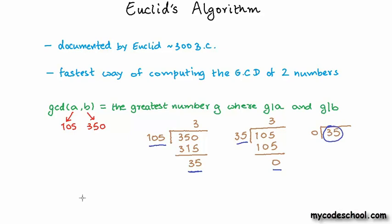Using Euclid's algorithm, we needed only two divisions to compute the GCD of 350 and 105. Compare this with our pretty efficient divisor-based algorithm which took 18 divisions. Even for this small case, you can see how much faster Euclid's algorithm is — it was nine times faster in this case. Now that we have an idea of how Euclid's algorithm works, let's look at the code for it.